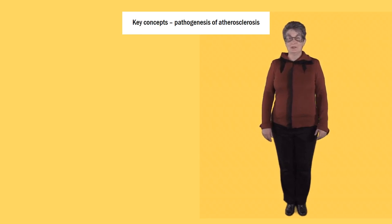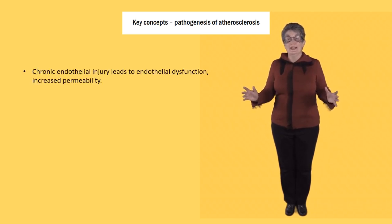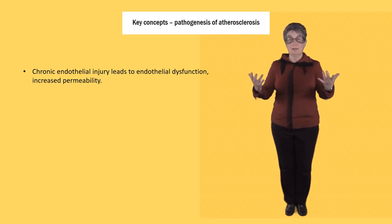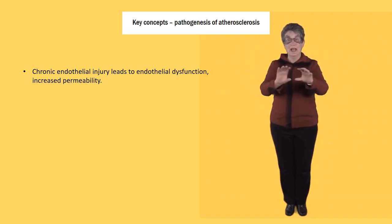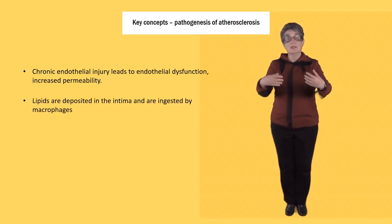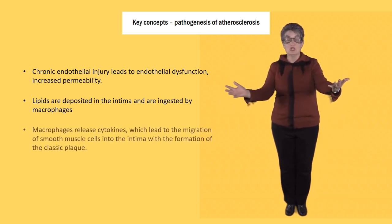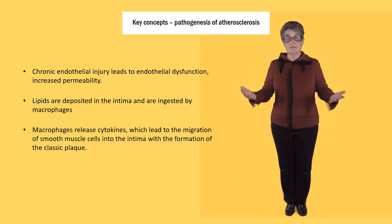These are the key concepts to remember in the pathogenesis of atherosclerosis. Chronic endothelial injury leads to endothelial dysfunction and increased permeability. Lipids come in through the endothelium and are deposited in the intima where they're ingested by macrophages. The macrophages then release cytokines which lead to the migration of smooth muscle cells into the intima with the formation of the classic plaque.